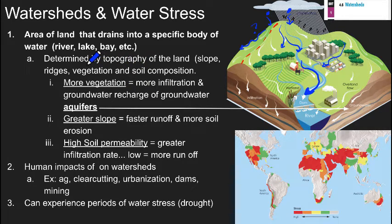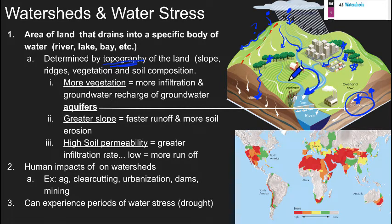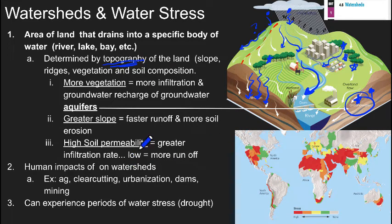What determines the watershed of an area? It's all about topography: slope, ridges, vegetation, and soil composition. If you have more vegetation, the plants are going to trap some of the water, and more of it will infiltrate down into the soil, recharging groundwater and aquifers. More concrete, more parking lots, and more channelized rivers and streams will push water farther away from the groundwater. Greater slope means faster runoff and more soil erosion, while higher soil permeability allows more water to recharge the aquifer.